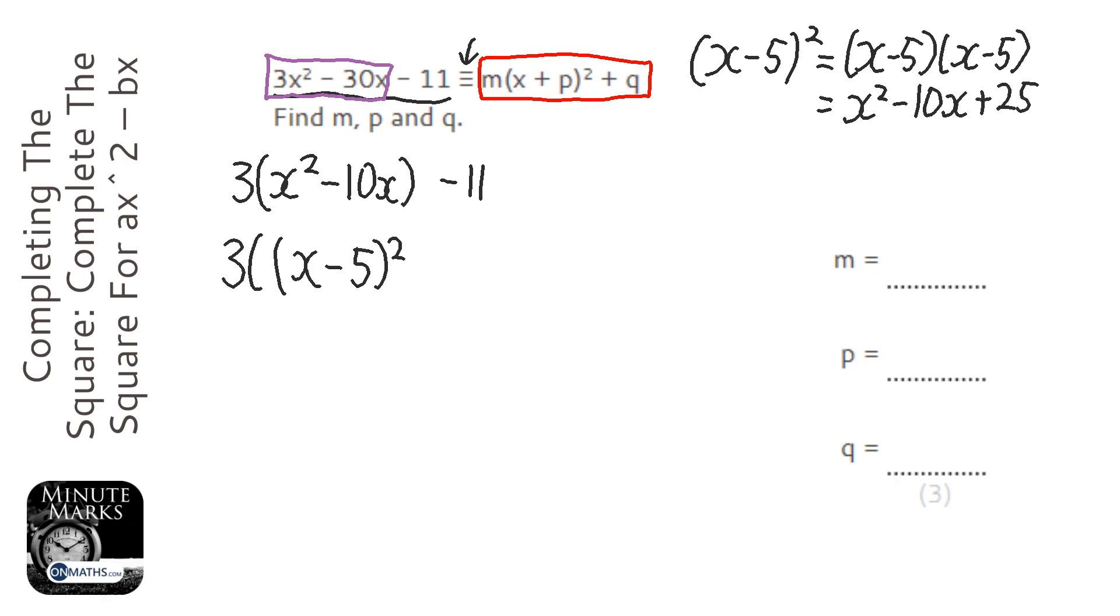So that all looks great apart from this plus 25 which we need to get rid of. So I'm going to minus 25 at this point here because it creates a 25 I need to get rid of that 25.